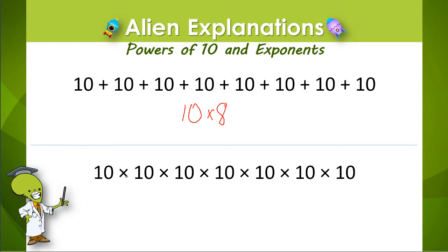Now what if we have the same number being multiplied over and over and over again? Well, we can use it the same way. We just see what number is being multiplied over and over and over again: 10. Now let's count how many times 10 is being multiplied: 1, 2, 3, 4, 5, 6, 7. It's being multiplied 7 times.